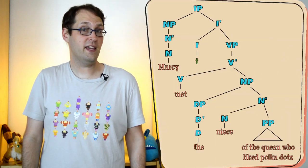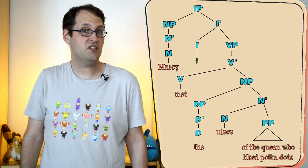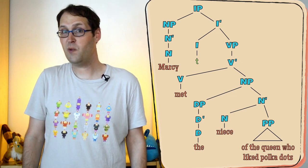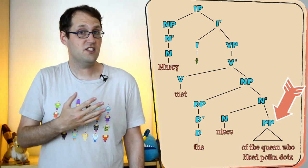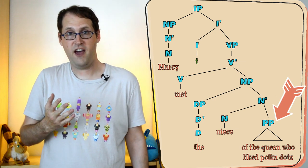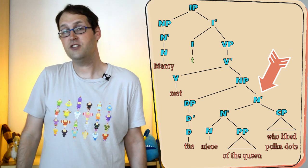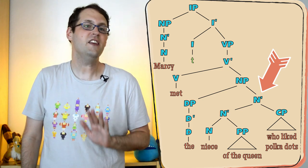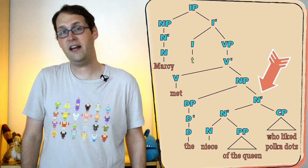And that isn't the only kind of syntactic ambiguity, not by a long shot. Let's consider a sentence like: who likes spotted designs here? Well, it depends where you put the relative clause. You could attach it to 'queen,' like this, and then you'd have a queen who's a polka dot fan. Or you could attach it to 'niece,' like this, and now it's the younger one who's into the dots. And again, there's nothing specific to the syntax that can tell you which of these is better.